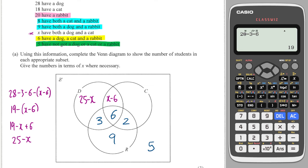On the other side we've got 18 people have a cat, so it'd be 18 minus 2 minus 6 minus again x minus 6. 18 minus 2 minus 6 is 10, so it's 10 minus x minus 6, which is 10 minus x plus 6, which is 16 minus x.